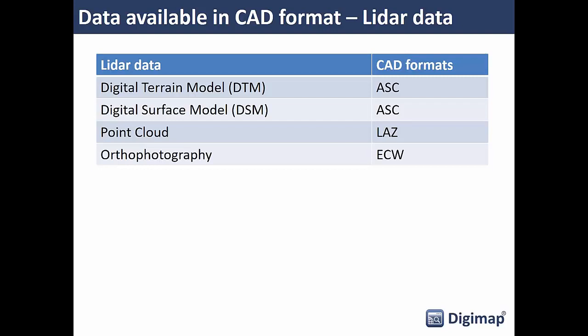Finally, the LiDAR data — our most recent collection available in Digimap, available for subscriptions from August last year and bundled with the aerial collection. There are four different datasets within this LiDAR collection. The first is a Digital Terrain Model — more detailed than Terrain 5 and Terrain 50, going down to 25-centimeter resolution. There's a range of resolutions: 25 centimeters, 50 centimeters, 1 meter, and 2 meter. All LiDAR data has better resolution than the Ordnance Survey Terrain 5 product.